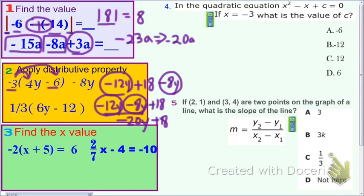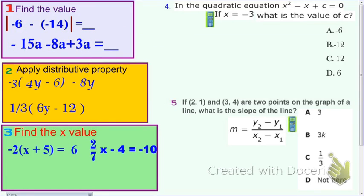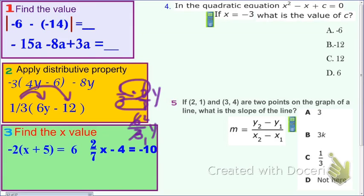Number 3. Find the X value. I'm sorry, I forgot. Distributing fraction, 1/3 times 6Y. Now you're going to make a fraction right? 1 times 6 is 6. 1 times 3 is 3, so 6/3 which is divided by 3. 6 divided by 3 is 2. So it's 2Y.